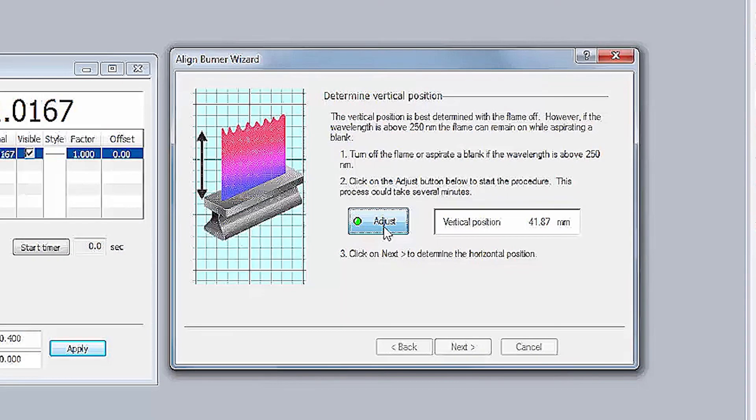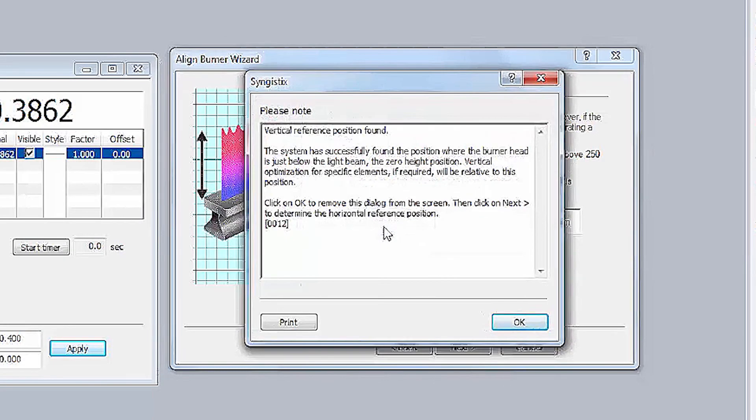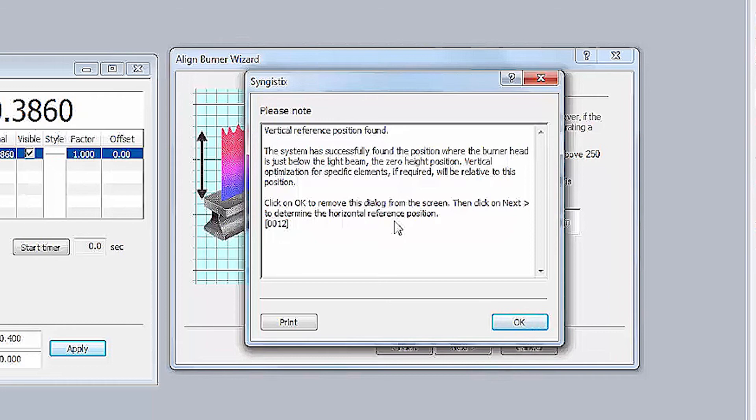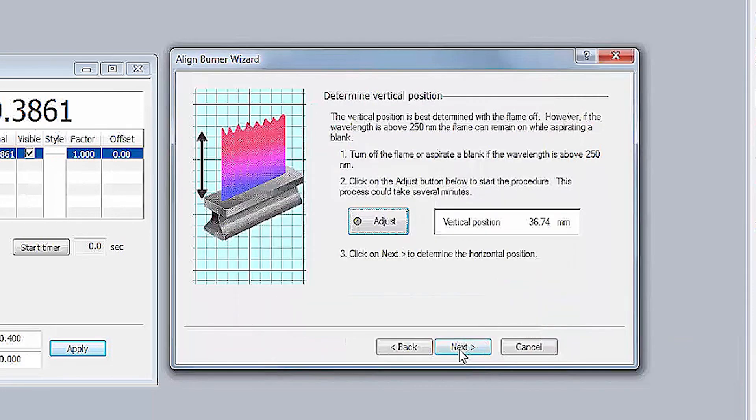Once the vertical reference point has been found, a message comes up indicating that the position has been saved. Click OK on this message. Click Next on the wizard.